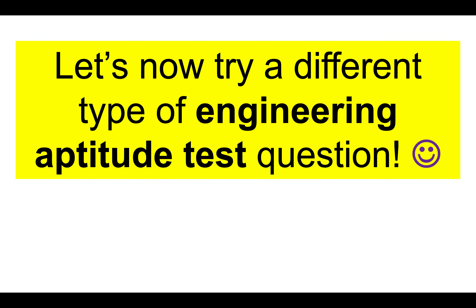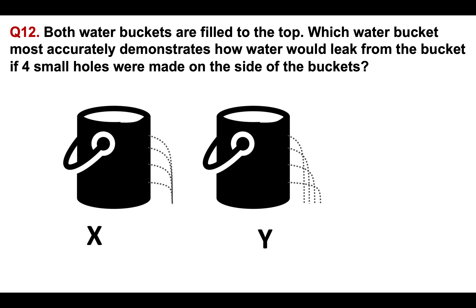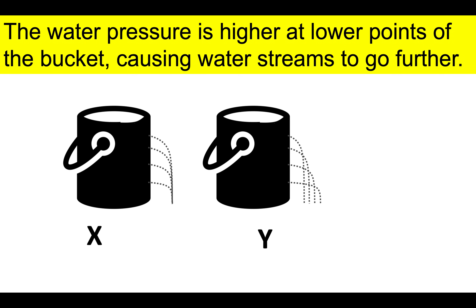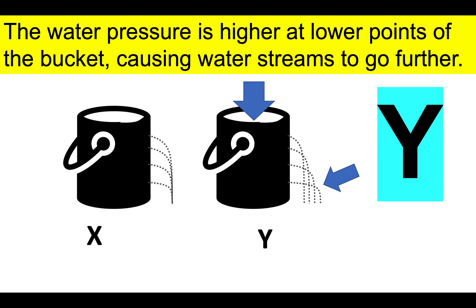Let's now try a different type of engineering aptitude test question. Question 12: both water buckets are filled to the top. Which water bucket most accurately demonstrates how water would leak from the bucket if four small holes were made on the side? The water pressure is higher at lower points of the bucket, causing water streams to go further. Therefore, the correct answer is Y.